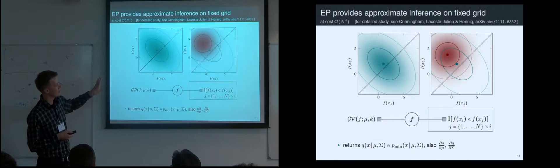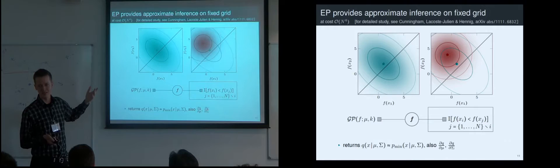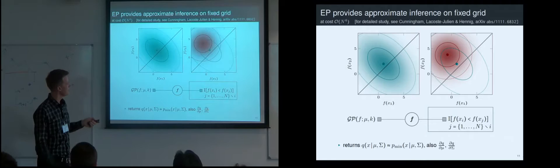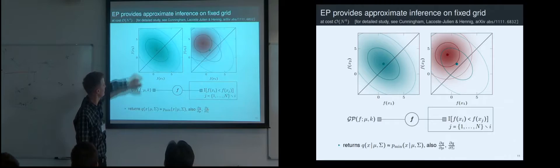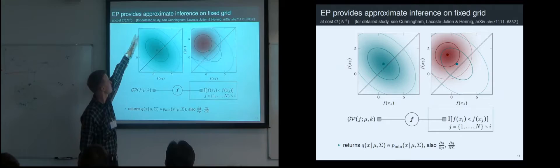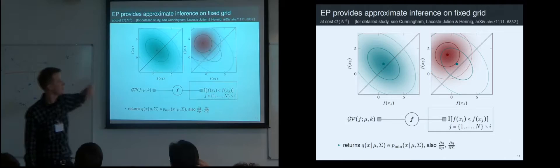Because they're Gaussian distributions, you can evaluate their normalization constant and that tells you the integral over the region. Here's an example: this is a joint Gaussian prior over two function values. To know the probability for one to be the minimum — for it to be smaller than the other — you compute the mass in the relevant region, which is not a Gaussian object, and fit a Gaussian to that distribution with the right moments. That's the entire algorithm; it's not so important.